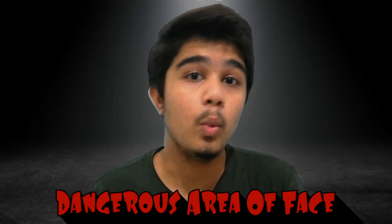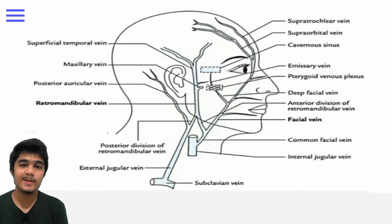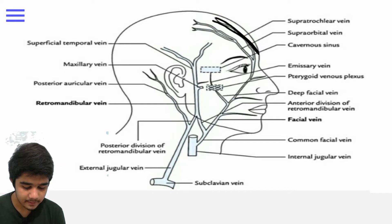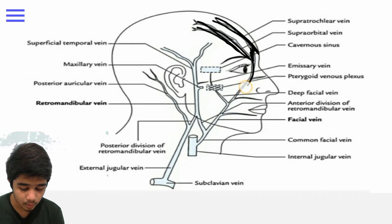And why it is called the dangerous area of the face — to understand this, we first need to understand the venous drainage of the face. So let's start the video and watch till the end. I have a beautiful image from the internet. You are looking at the supra-trochlear vein and supra-orbital vein — they combine to form the angular vein, which then continues as the facial vein.